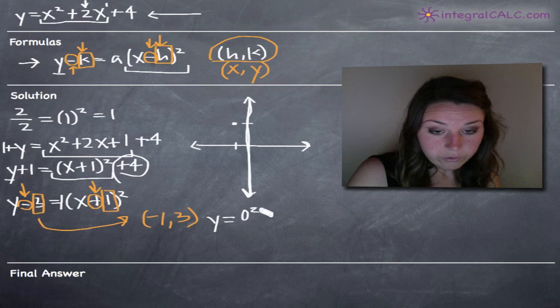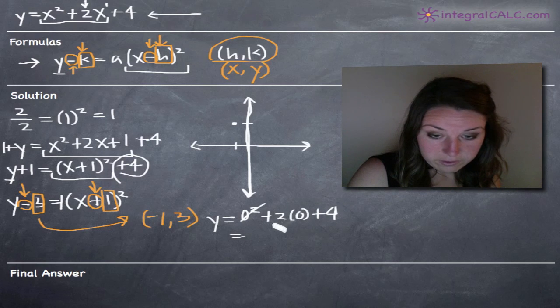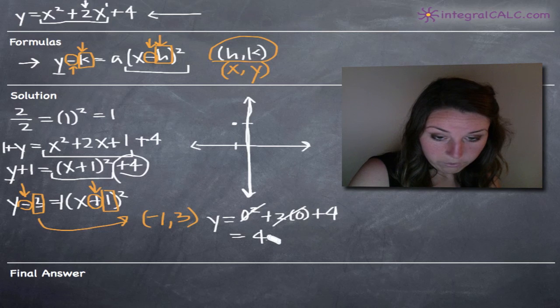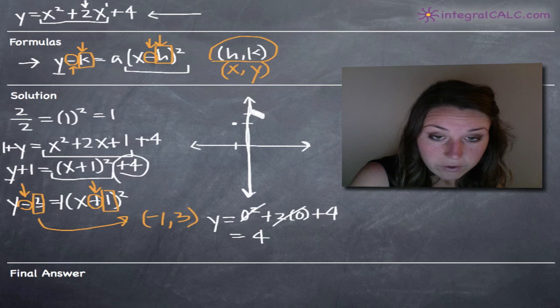y equals zero squared plus two times zero plus four gives us zero plus zero plus four. So that's four. So our y-intercept is going to be at four.